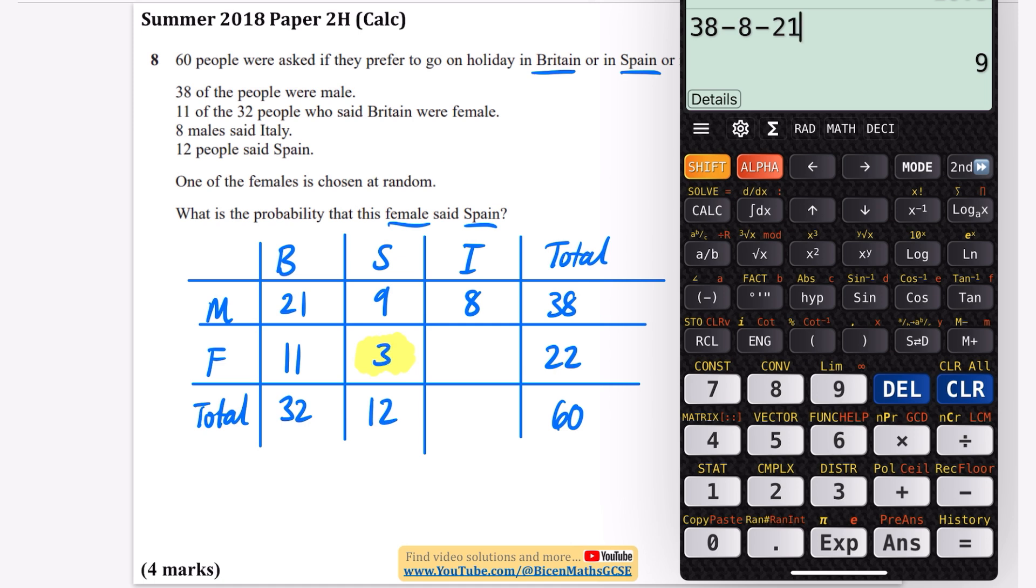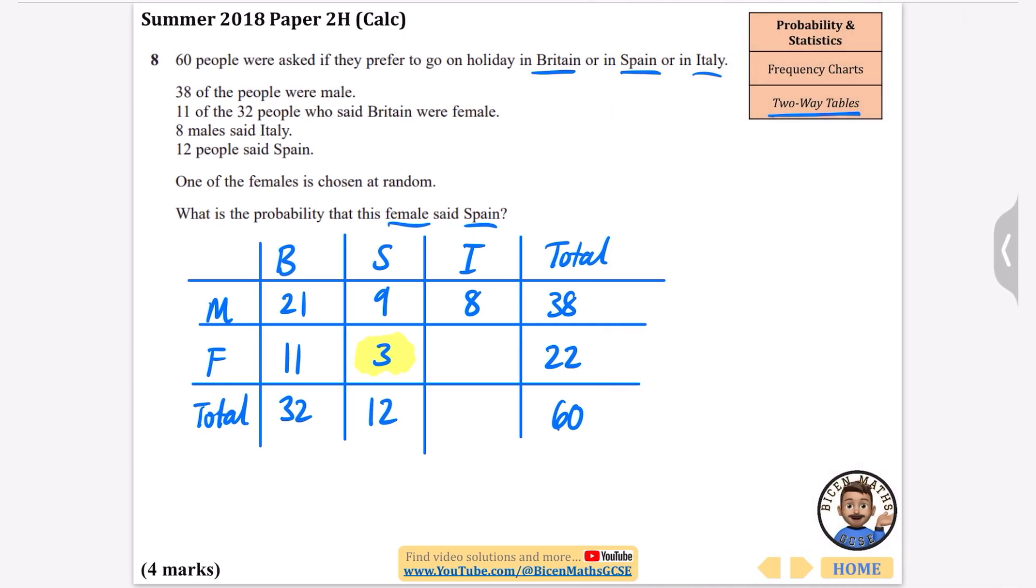Now you could finish the rest of the table to check that it all works but it will do, and they have said to us in this question that a female is chosen at random so we're picking one of these females that we've got here and we want to know what's the probability that she said Spain, so it's going to be out of 22 because that's the number of females that there are and three of them said Spain, so it's going to be three out of 22.